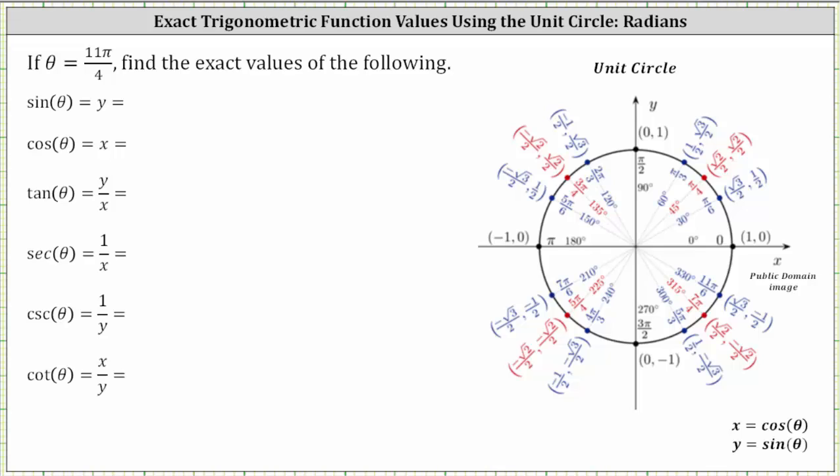We're asked to find the exact trig function values given theta equals 11 fourths pi radians. In this video, we will use the unit circle to determine the trig function values.